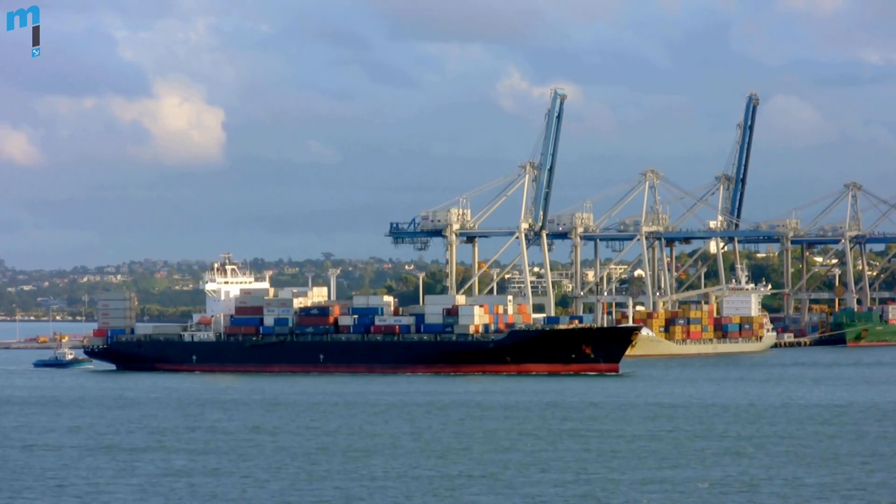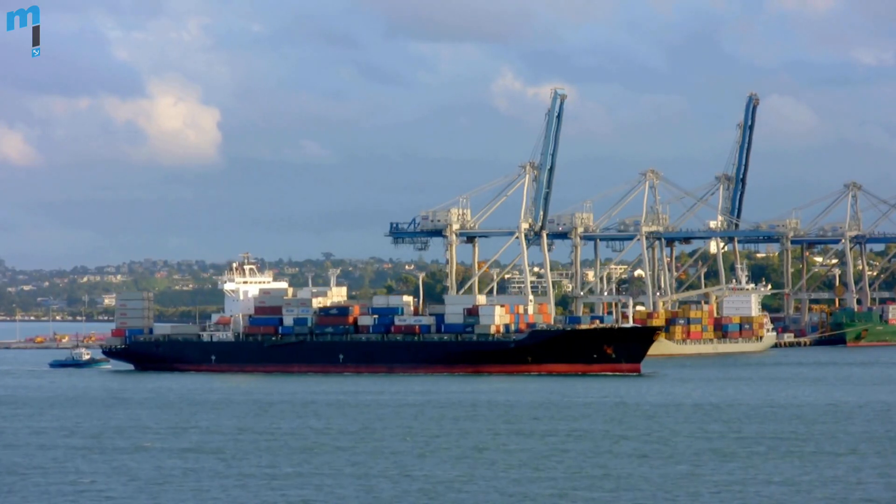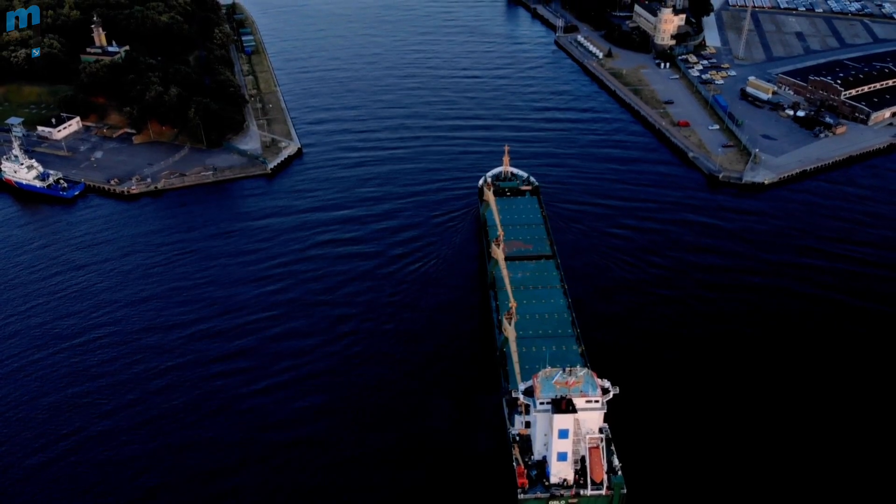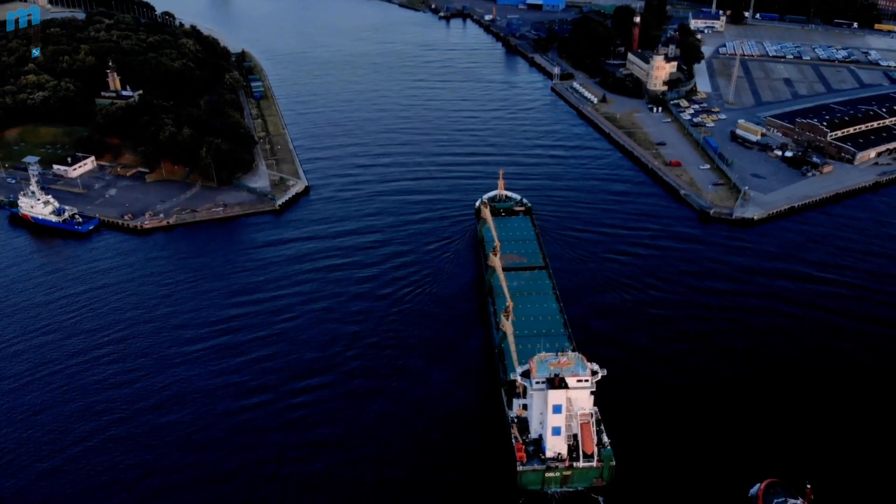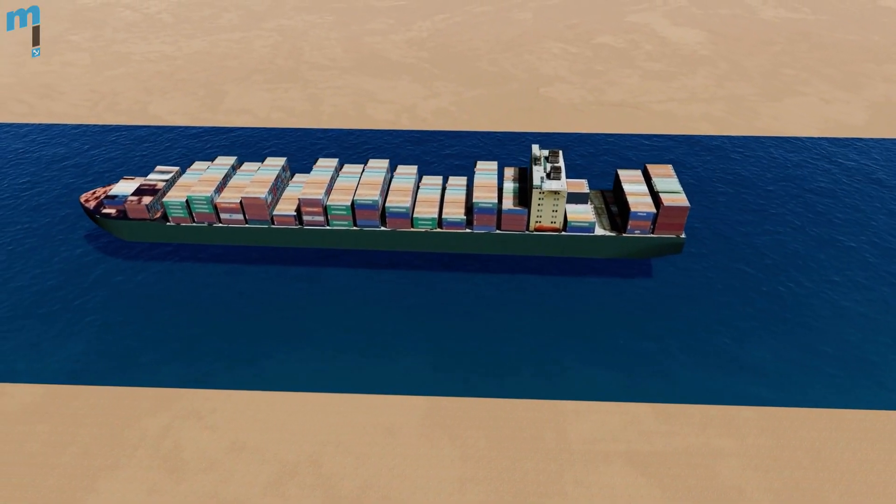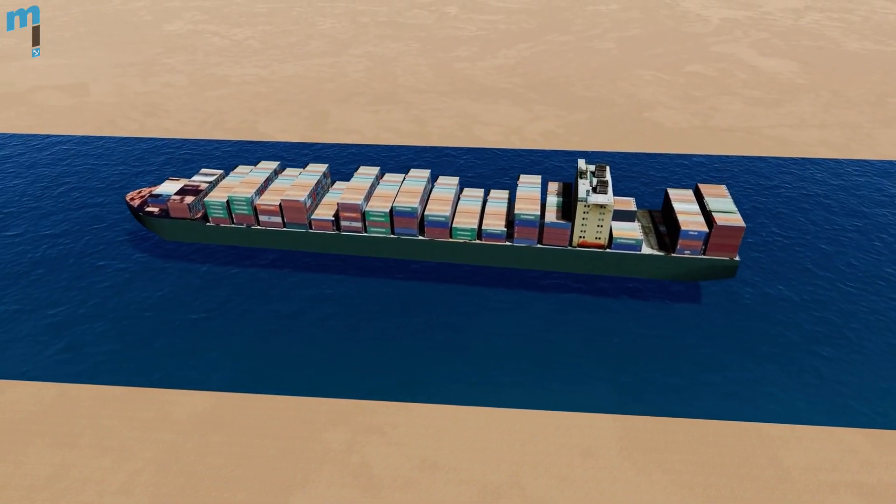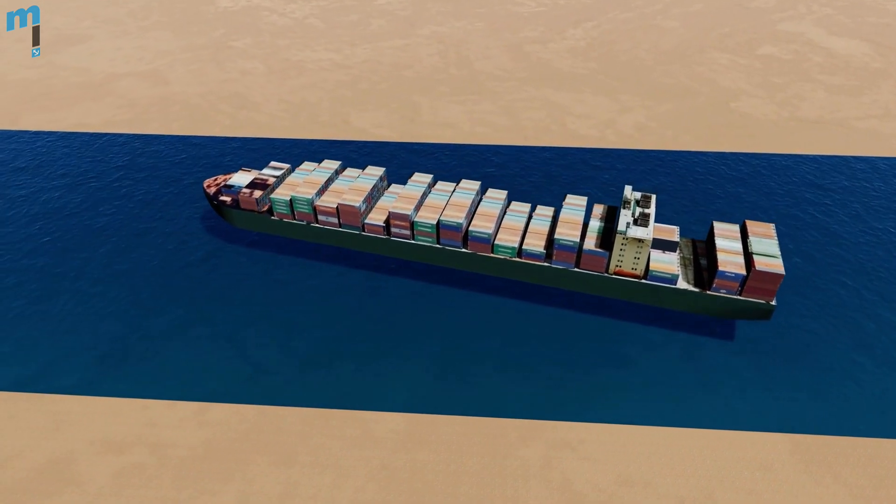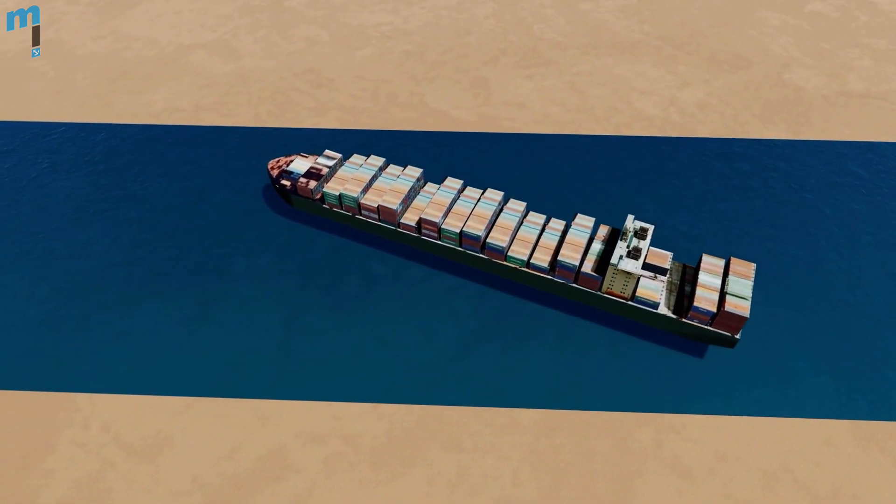When a ship moves through restricted waters, it has to navigate close to the shore and other man-made structures because of limited navigable width. The shallow water and the proximity of the sides of the channel affects the ship navigation through the restricted waters. These effects cause errors in maneuvering which can lead to grounding or collision.